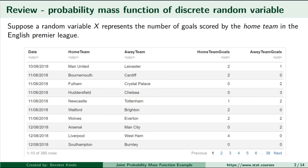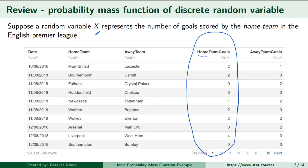Suppose the random variable X represents the number of goals scored by the home team in the English Premier League. Imagine that as the final score — the number of home team goals is represented by the random variable X. By the way, the English Premier League is the top level of the English football league system. By home team, I mean the team playing in their own stadium.